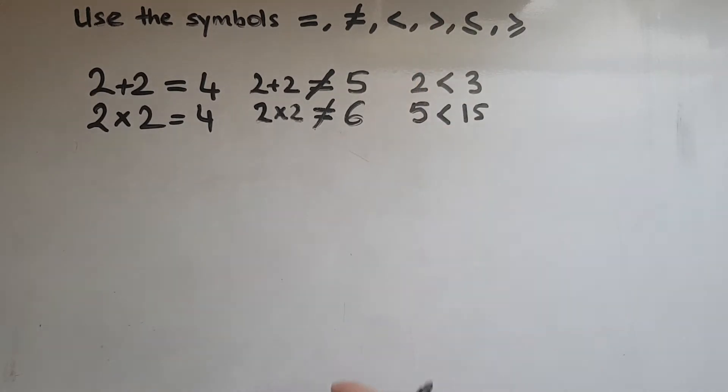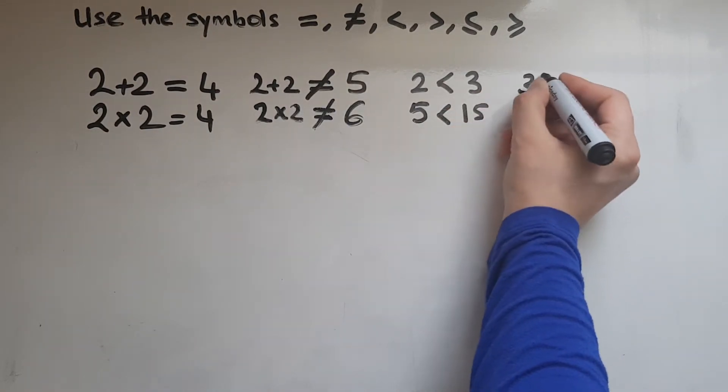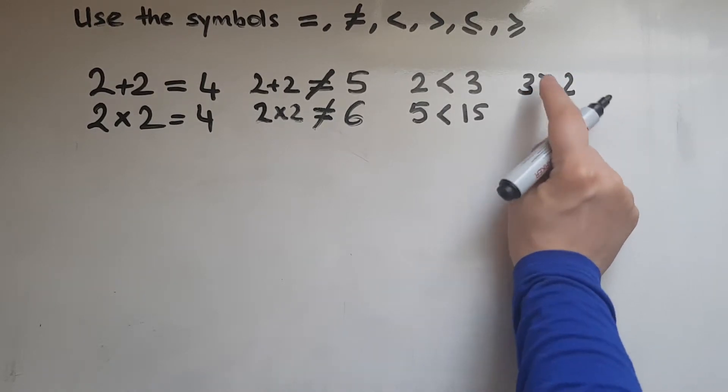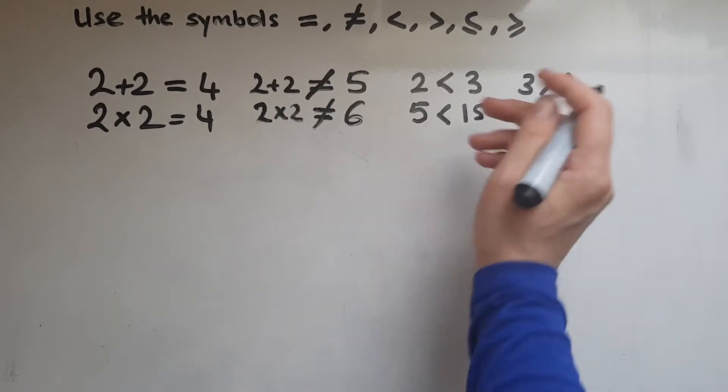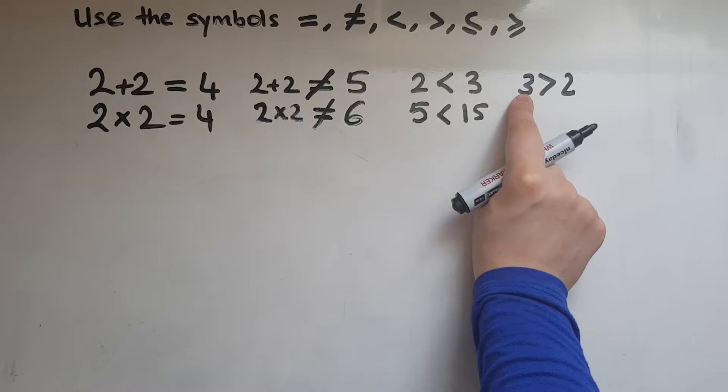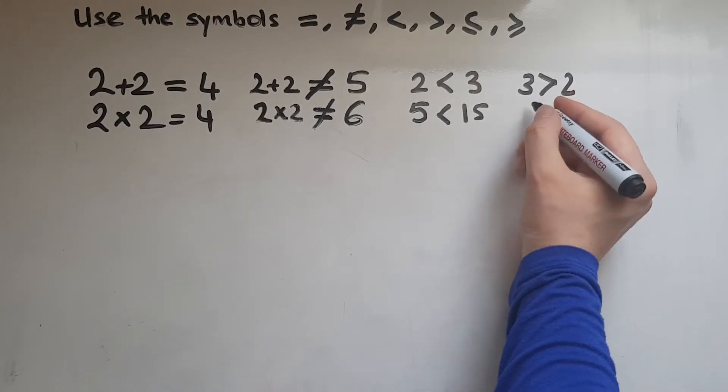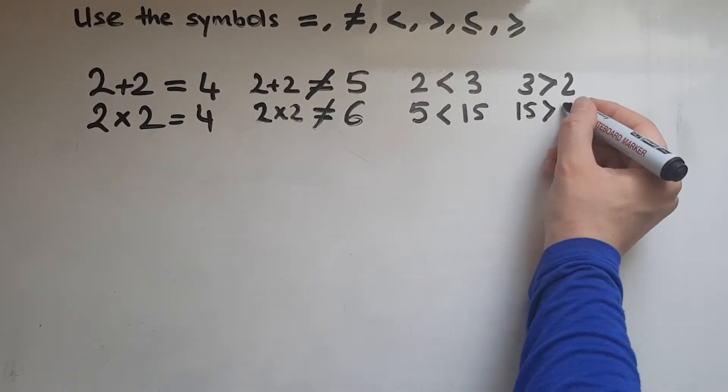This one means greater than or bigger than. If I just reverse this, then 3 is bigger than 2. Again, the area that the symbol covers here next to 3 is much bigger. Whereas near 2 is like a dot, just a dot that then expands. And 15 is greater than 5.